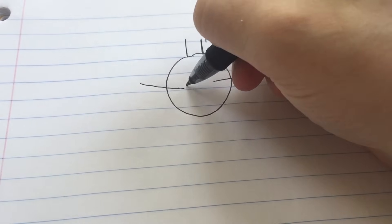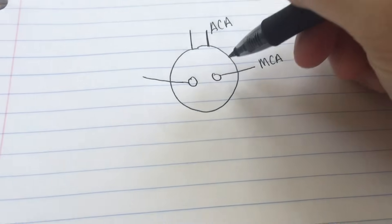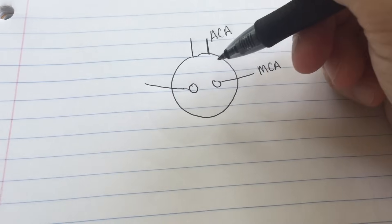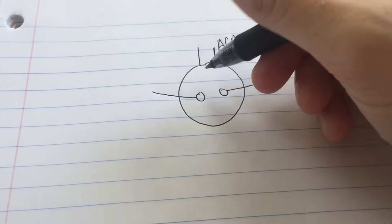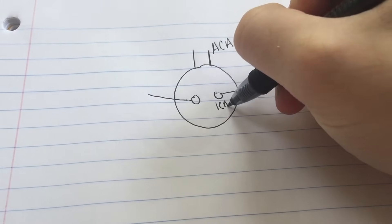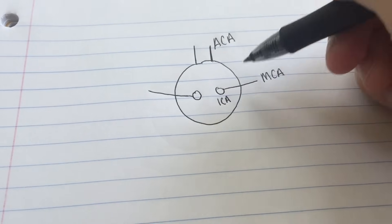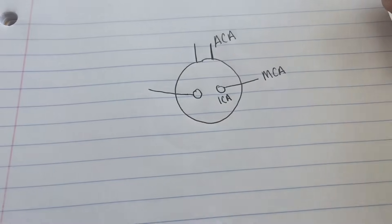Now the middle cerebrals feed into two arteries that are the internal carotids. And the internal carotids are the eyes of the stick figure. And this is really easy to remember because I see out of my eyes or ICA. ICA for internal carotid artery and I see out of my eyes.